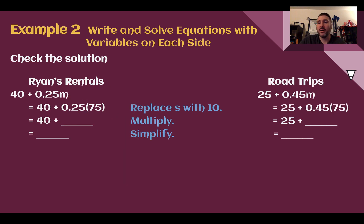Last, let's double check to make sure that our solution we got does in fact make both companies have the same price. So if I plug in 75 for M, 0.25 times 75 is $18.75. Add the 40, we get $58.75. So Ryan's rentals for 75 miles would cost $58.75.